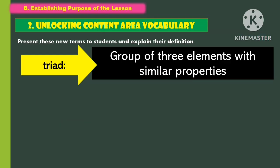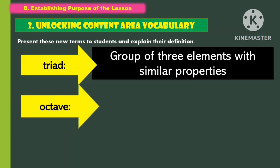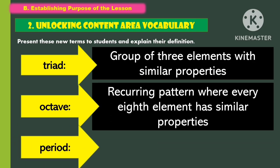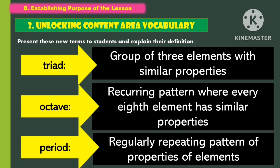For unlocking of content area vocabulary, present these new terms to students and explain their definitions. The first word is triad — a group of three elements with similar properties. Another term is octave — a recurring pattern where every eight elements has similar properties. Another term is period — regularly repeating patterns of properties of elements.